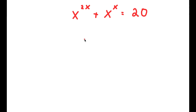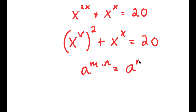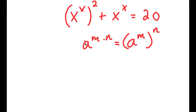In this problem, x to the power of 2x plus x to the power of x is equal to 20. To solve this, I'm going to first rewrite x to the power of 2x as x to the power of x, to the power of 2. I can do this because a to the power of m times n is the same as a to the power of m to the power of n. Now I'm going to let the variable y equal x to the power of x.